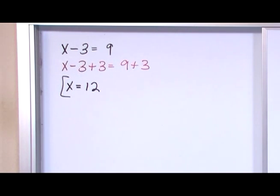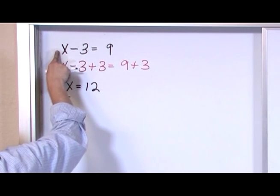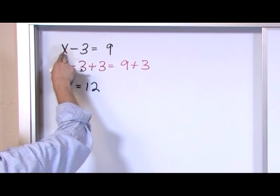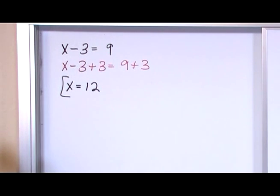Now, you can always check your work with equations, because you get an answer, you can plug that answer right back into the equation. 12 is x, so we say 12 minus 3 is 9. 9 equals 9. That's good. That's our answer.